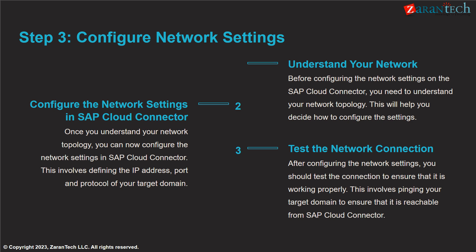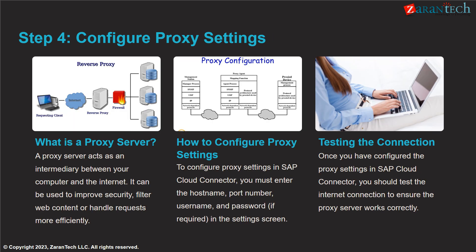Before configuring network settings, understand your network topology to decide how to set up the cloud connector. Specify the IP address, port, and protocol for connecting to your on-premise domain. Test the connection to ensure it is working properly. If your organization uses a proxy server, configure the proxy hostname, port, username and password in the cloud connector settings. Test the internet connection through the proxy to validate that it is working correctly.